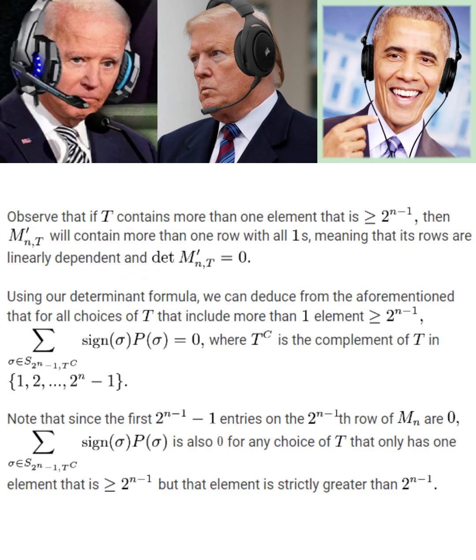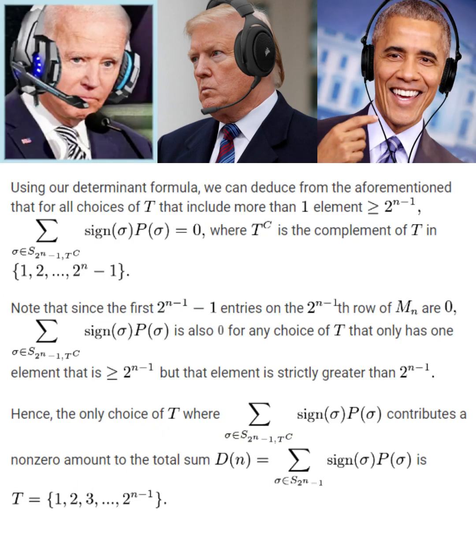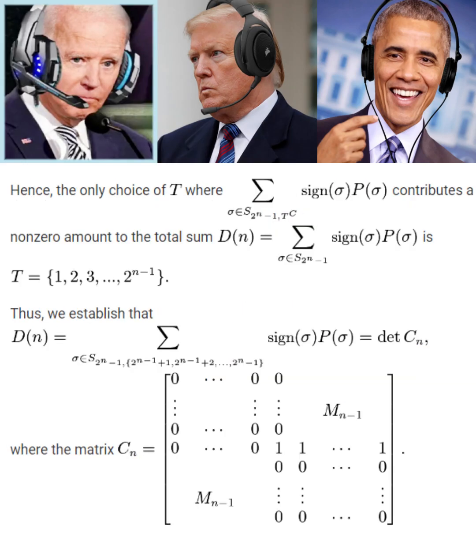Turns out that the choices for T are even more restricted. Note that since the first 2 to the N minus 1 minus 1 entries on the 2 to the N minus first row of M sub N are 0, the summation that Biden mentioned is also 0 for any choice of T that only has one element that is greater than or equal to 2 to the N minus 1, but that element is strictly greater than 2 to the N minus 1. Hence, the only choice of T where the summation in question contributes a non-zero amount to the total summation form for D sub N is when T is the set of the first 2 to the N minus 1 positive integers. Holy fucking shit, I'm totally lost. That's a skill issue, Trump.